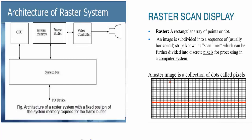Welcome to computer graphics. Today we'll be studying about raster scan display. First, we'll see the architecture. There is a CPU, system memory, and a frame buffer. This collects information and transfers it via the system bus to the CPU or logical part, then to the I/O device, then to the video controller. Whatever is calculated from all of this goes to the CRT or display, and we see the image.